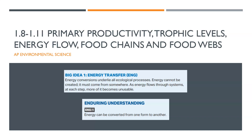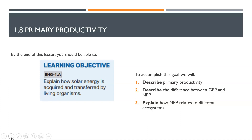Our big idea has changed. Now we're going to talk about energy conversions and how energy flows through ecosystems and how it becomes more unusable at each step. Our enduring understanding is that energy can be converted from one form to another. We're going to start with lesson 1.8. By the end of this lesson, you should be able to explain how solar energy is acquired and transferred by living organisms.